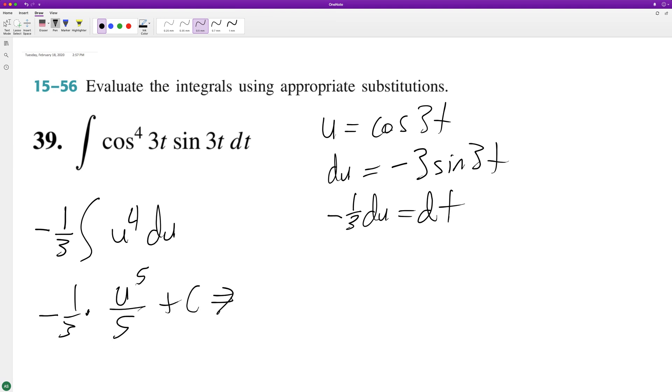So we can substitute back in, so we have cosine to the 5th 3t over, we'll make this negative, over 15. You could factor that out, but it's fine, and then plus c, and that's it.